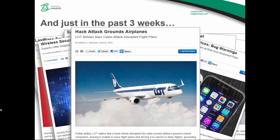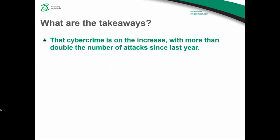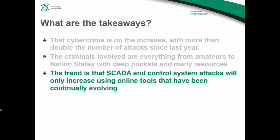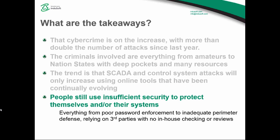So what are the takeaways of all these stories? First, cyber crime is on the increase with more than double the number of attacks since last year. The criminals involved range from amateurs to nation-states with deep pockets and many resources. The trend is that SCADA and control system attacks will only increase using online tools that have been continually evolving since Stuxnet. People and organizations still use insufficient security, including everything from poor password enforcement to inadequate defense perimeters and relying on third-party vendors with no in-house checking or reviews.